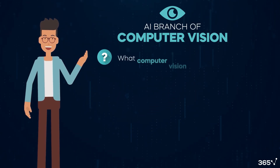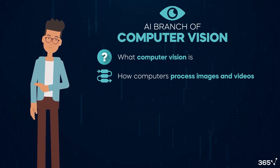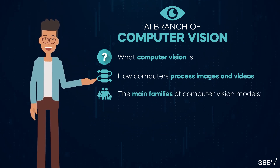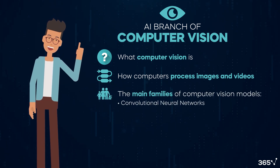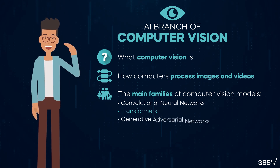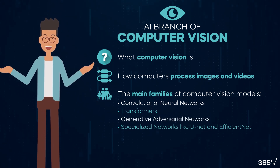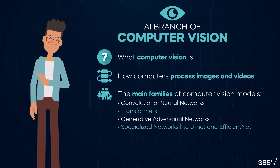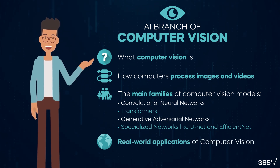We'll cover what computer vision is, how computers process images and videos, the main families of computer vision models — including convolutional neural networks, transformers, generative adversarial networks, and specialized networks like UNet and EfficientNet. Then we'll look at real-world applications of computer vision.